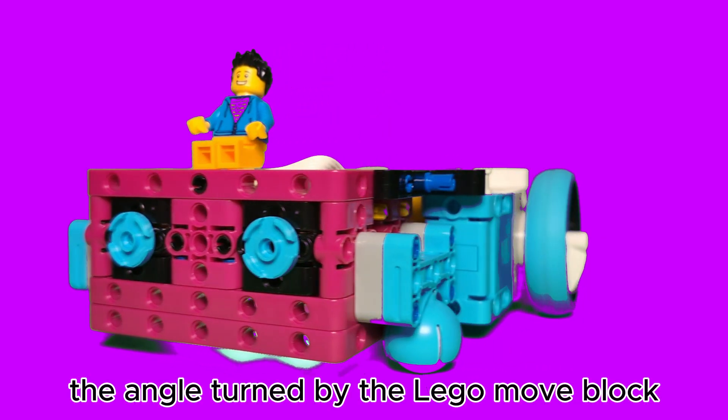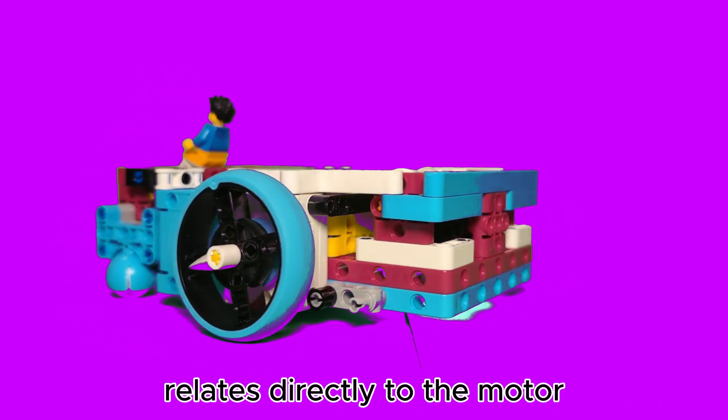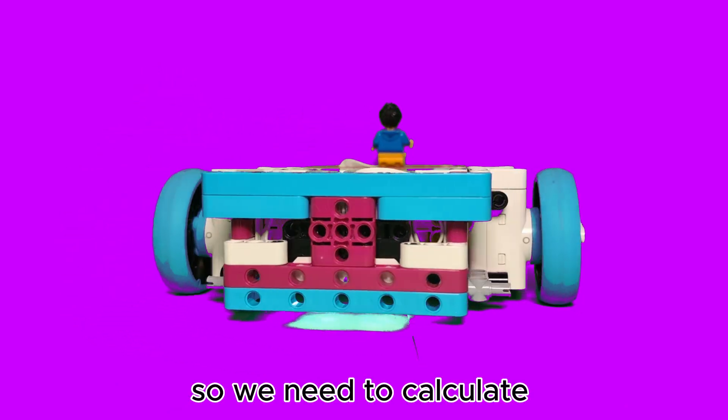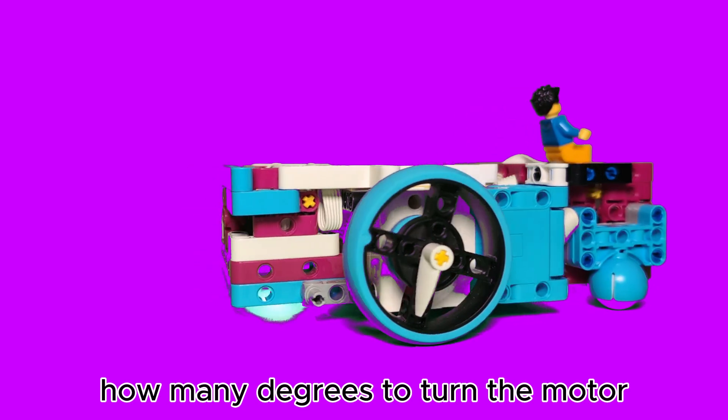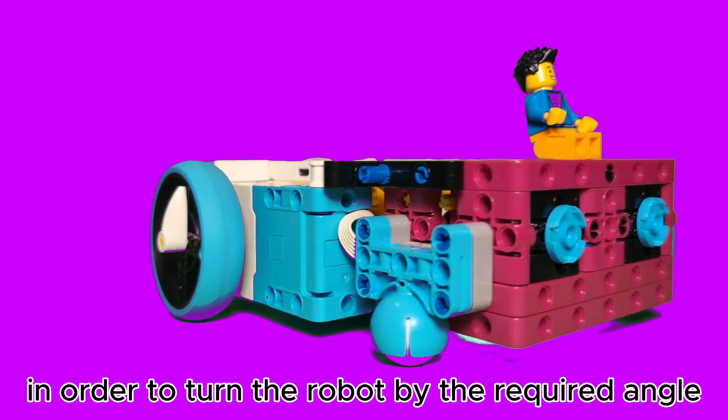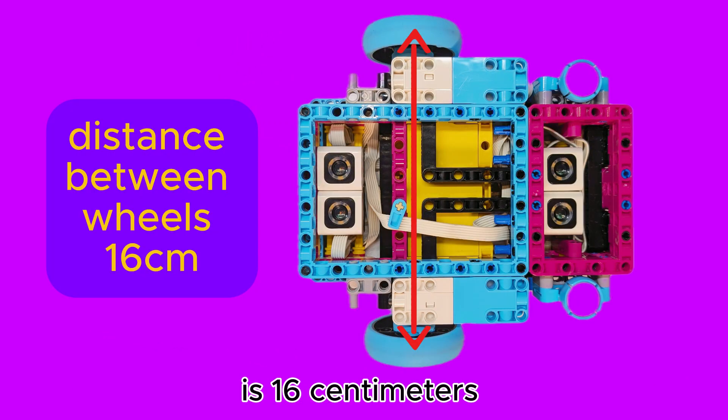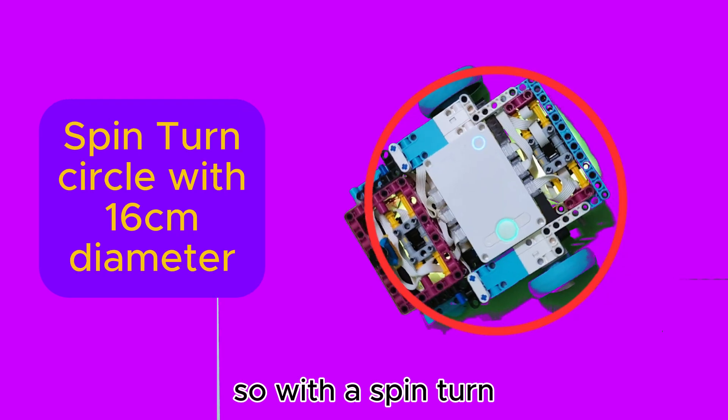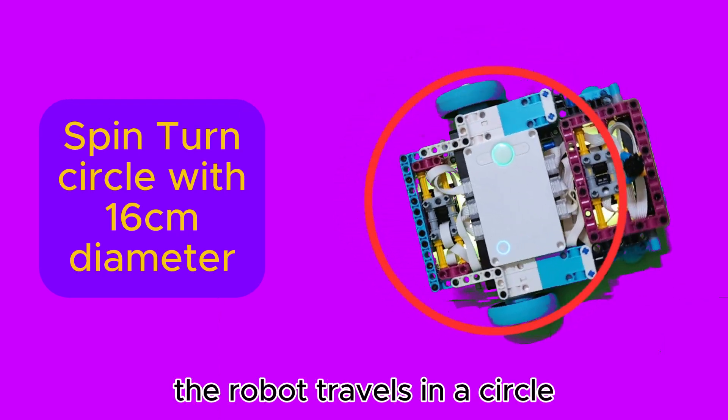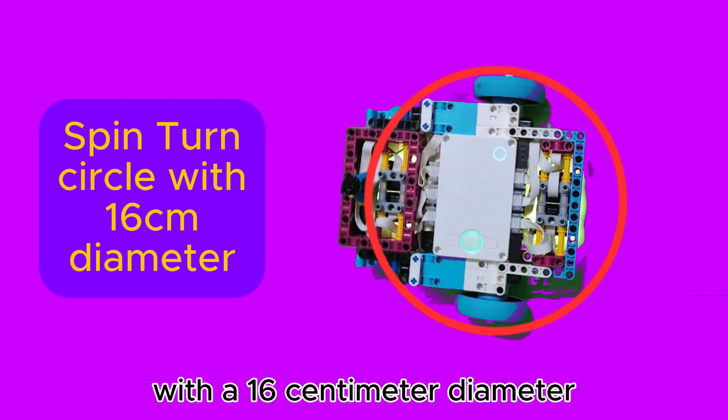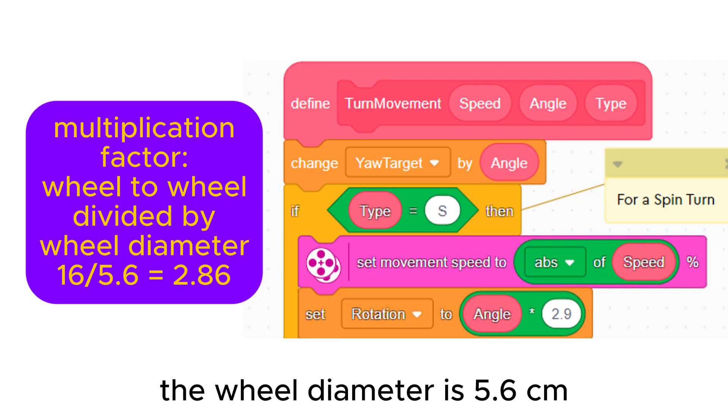The angle turned by the Lego move block relates directly to the motor. So we need to calculate how many degrees to turn the motor in order to turn the robot by the required angle. The distance between the robot's wheels is 16cm. So with a spin turn, the robot travels in a circle with a 16cm diameter. The wheel diameter is 5.6cm. So we need to multiply the number of degrees to turn by 16 divided by 5.6, which is 2.86.